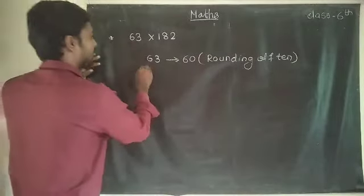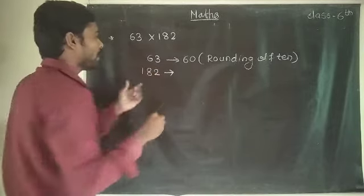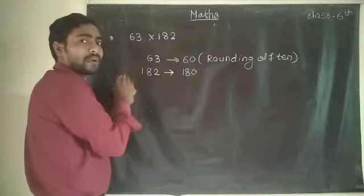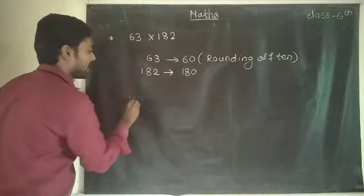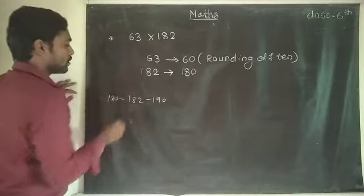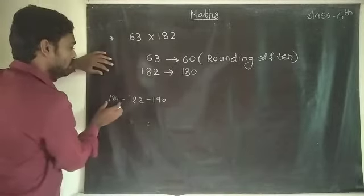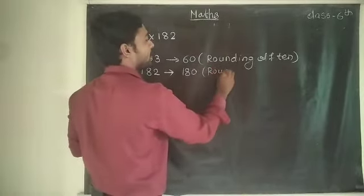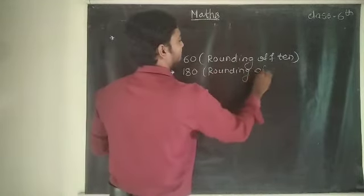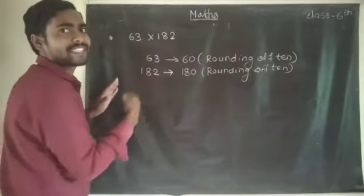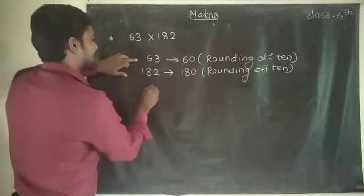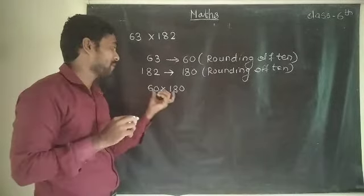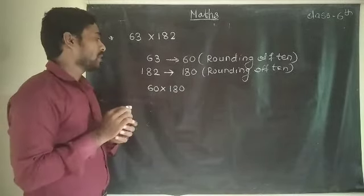Similarly for 182: the rounding of 10. The rounding of 10 for 182 is 180, because 182 is between 180 and 190, and 182 is closer to 180. So we write 180. Then we do the multiplication: 60 multiplied by 180. This is a little complicated to multiply.